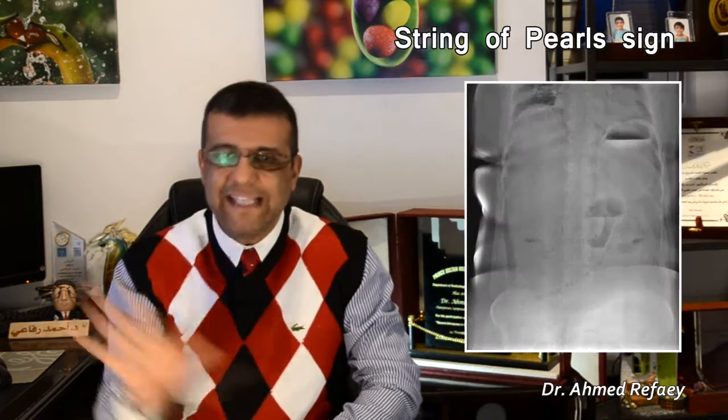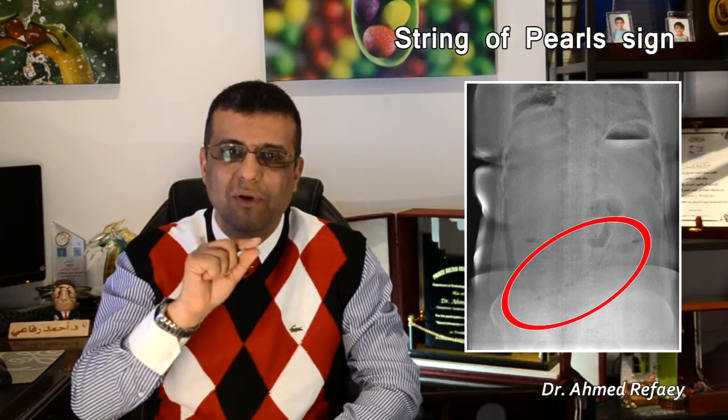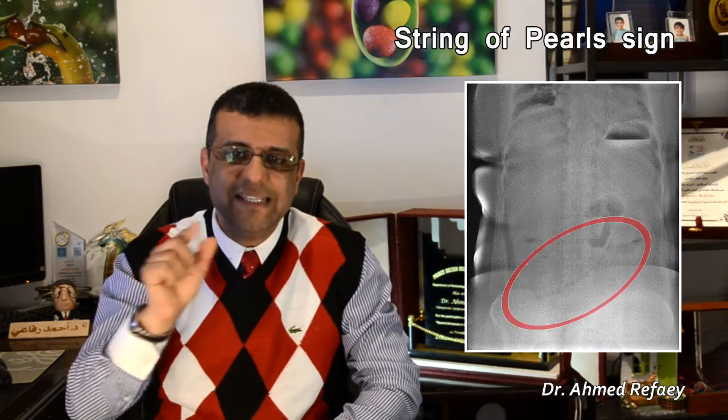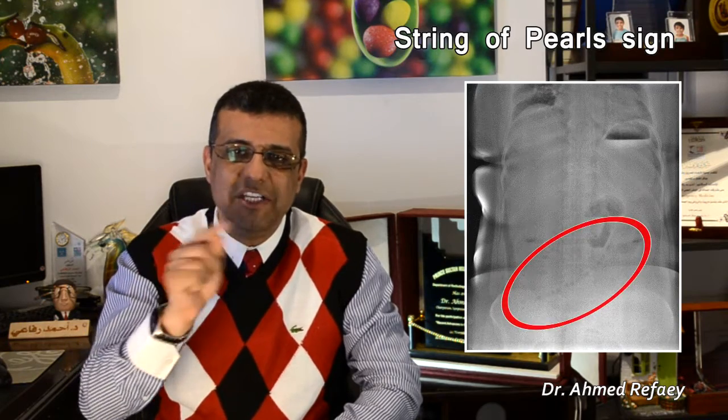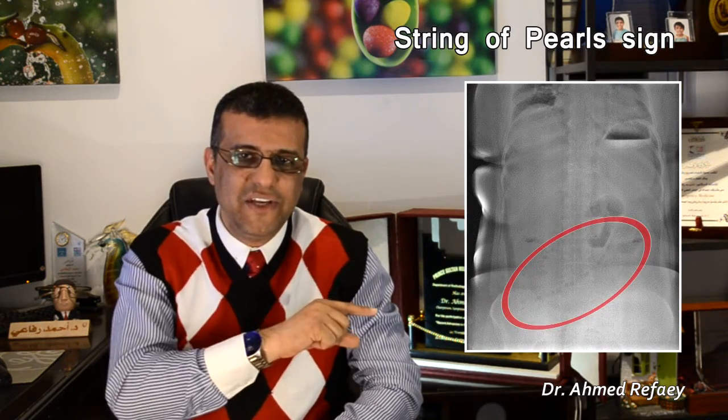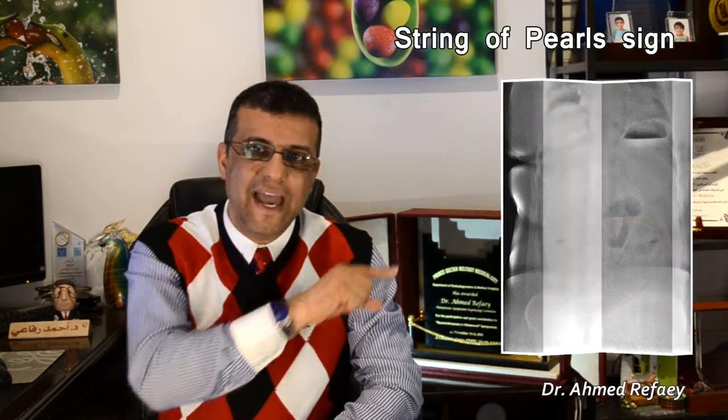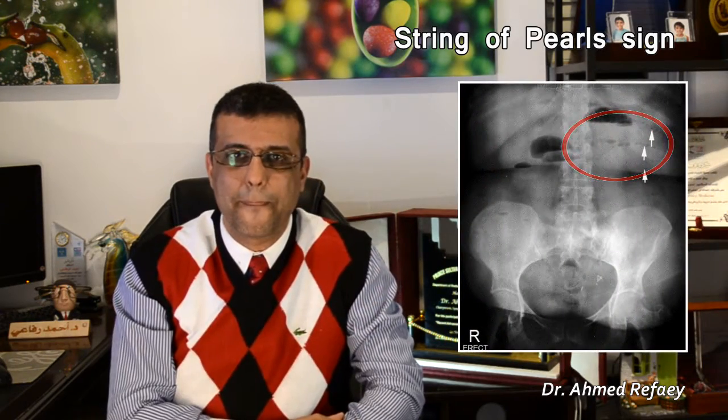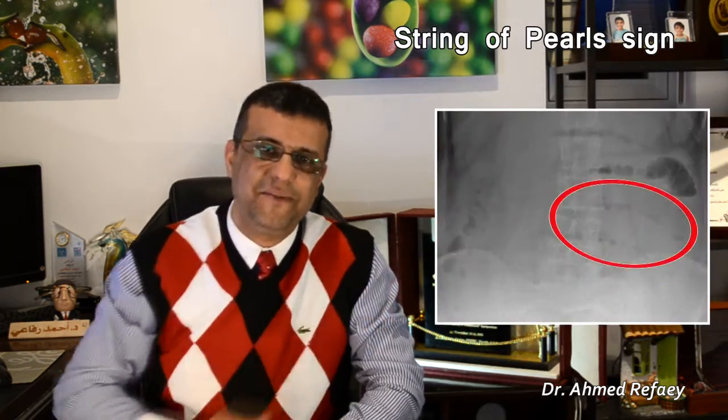The string of beads sign is due to trapped air between the valvulae conniventes in fluid-filled dilated small bowel loops in erect position. It is appreciated in the form of a nearly gasless abdomen with multiple rounded small lucencies arranged beside each other, as seen in these images.